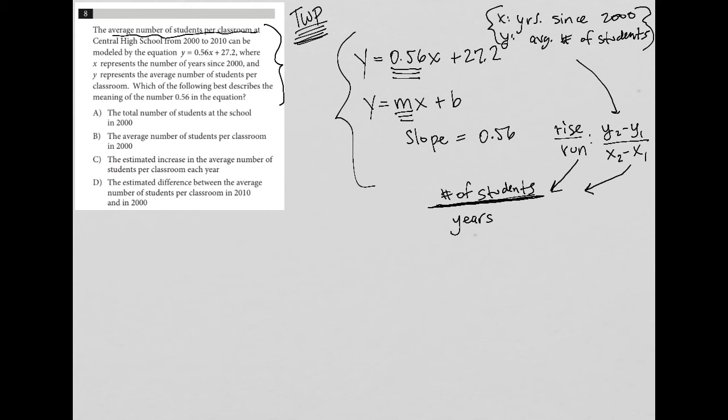So answer choice A says the total number of students at the school in 2000. Well, that's definitely not true because slope does not give you a total number of anything. Choice B, the average number of students per classroom in 2000. Well, that's also not true because slope is rise over run. Slope has to do with rate of change. So that's definitely also not the right answer. Choice C, the estimated increase in the average number of students per classroom each year. So I like that one because at least it's dealing with the number of increase. So I like that definition. Let's see choice D, see if it's any better. The estimated difference between the average number of students per classroom in 2010 and in 2000. So that's pretty close.